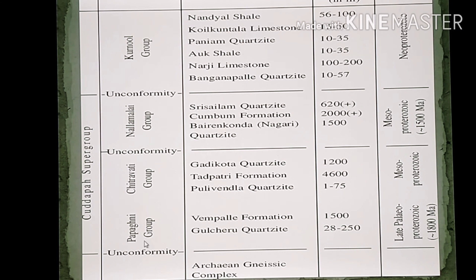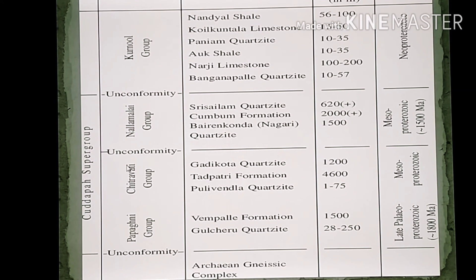A mnemonic to remember the Kadappa system is 'Papa chocolate nahi khate': P for Papa stands for Papagani, Chocolate for Chedaya, Nahi for Nallamalaya, and Khate for Kurnool — or you can say Kistana, which sits above Nallamalaya.